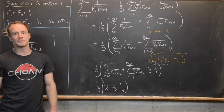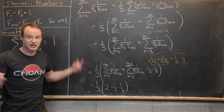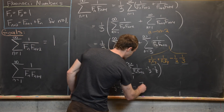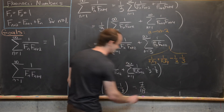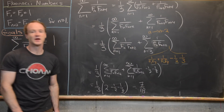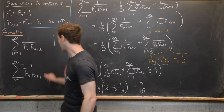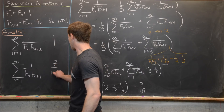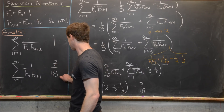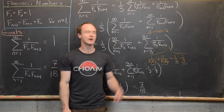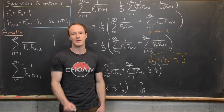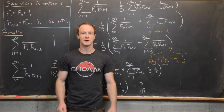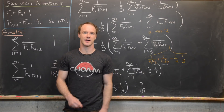We have one third times the quantity 2 minus one half minus one third. Checking carefully, this equals one third times seven sixths, which gives 7/18. So the final answer for the sum from n=1 to infinity of 1/(f_n · f_{n+4}) is 7/18.